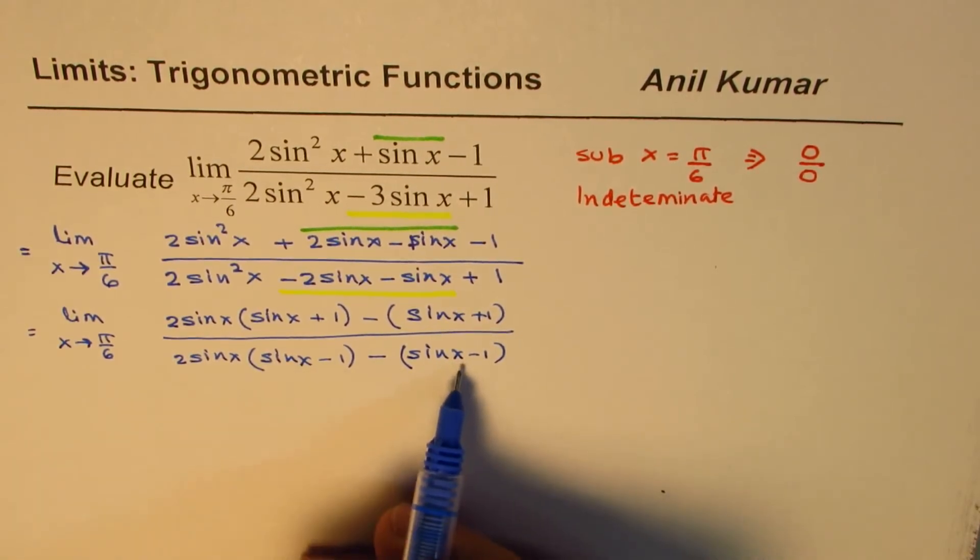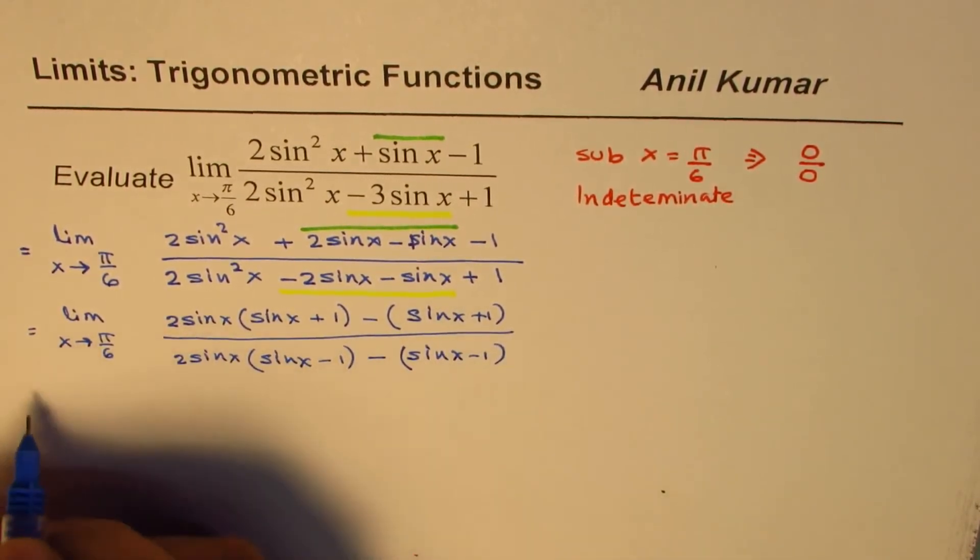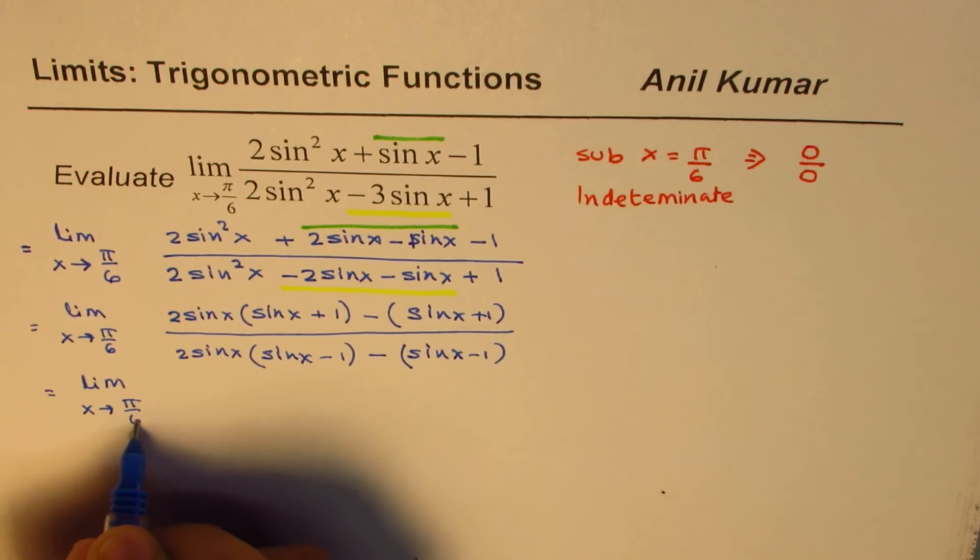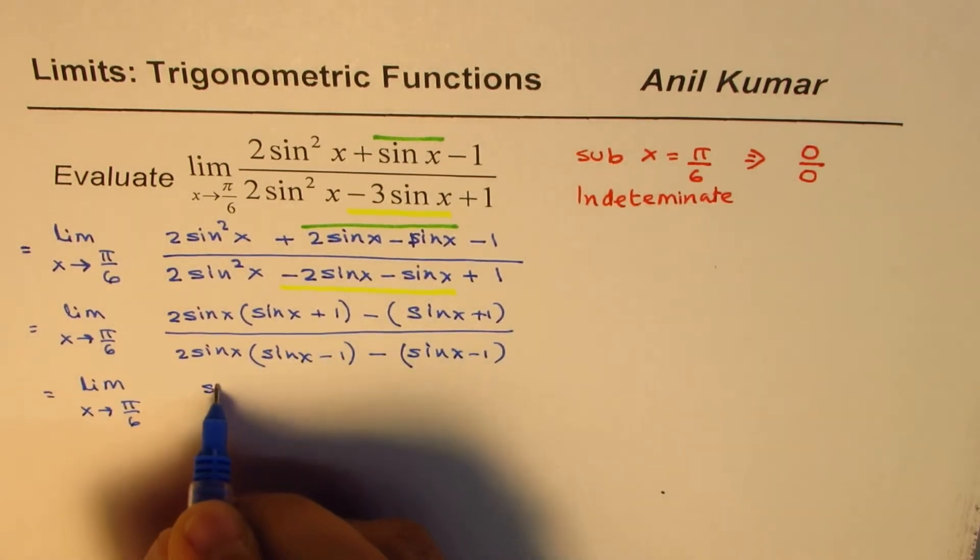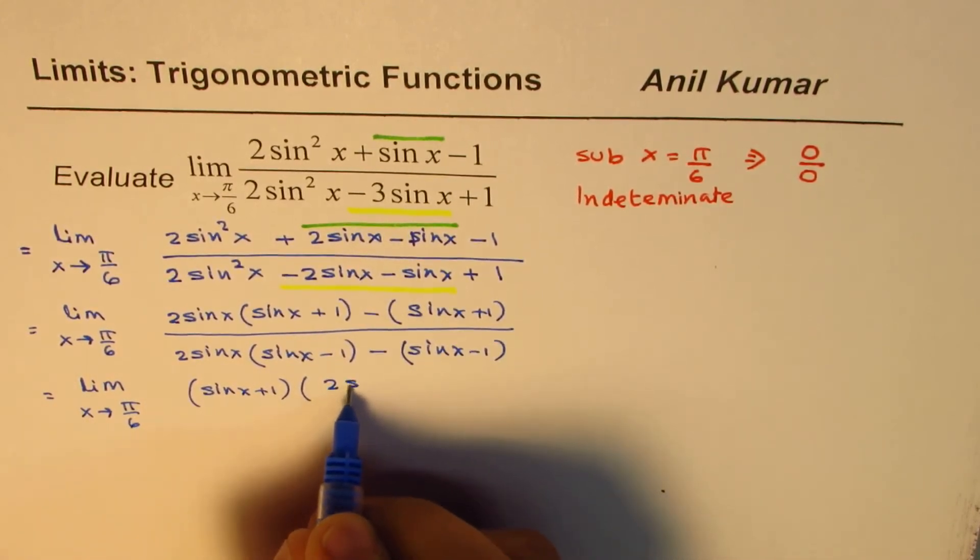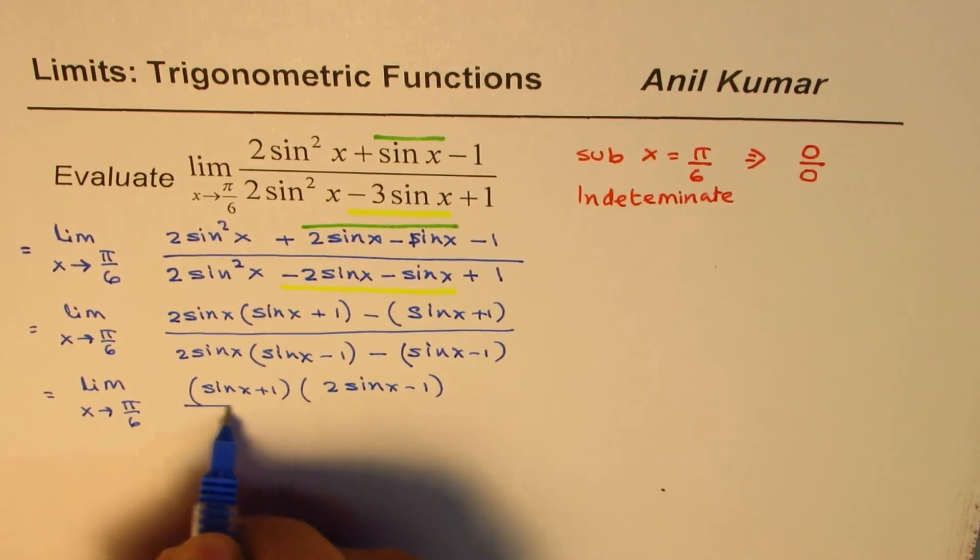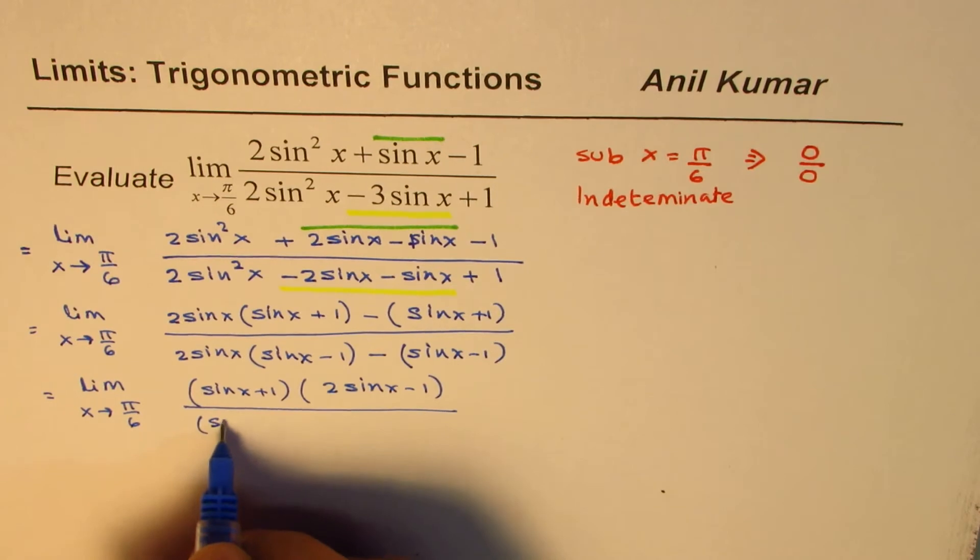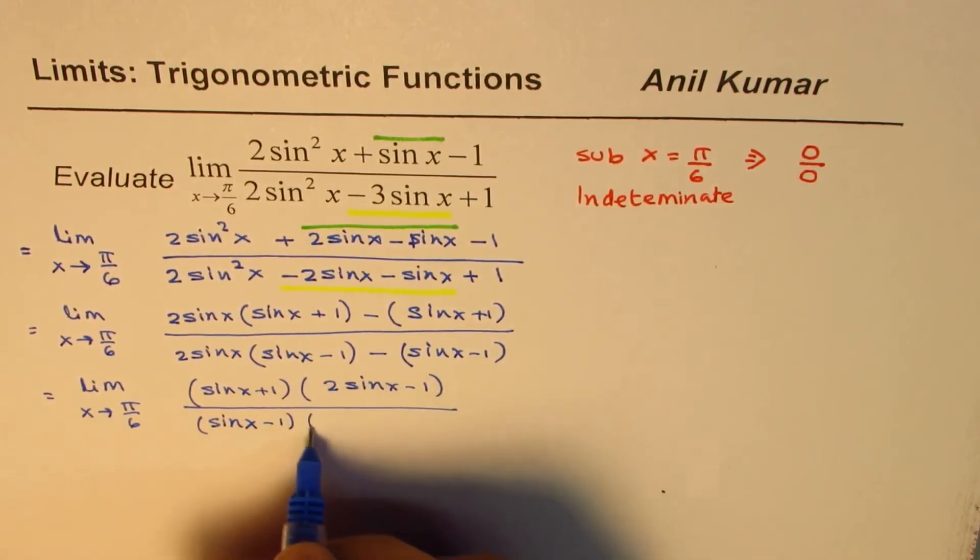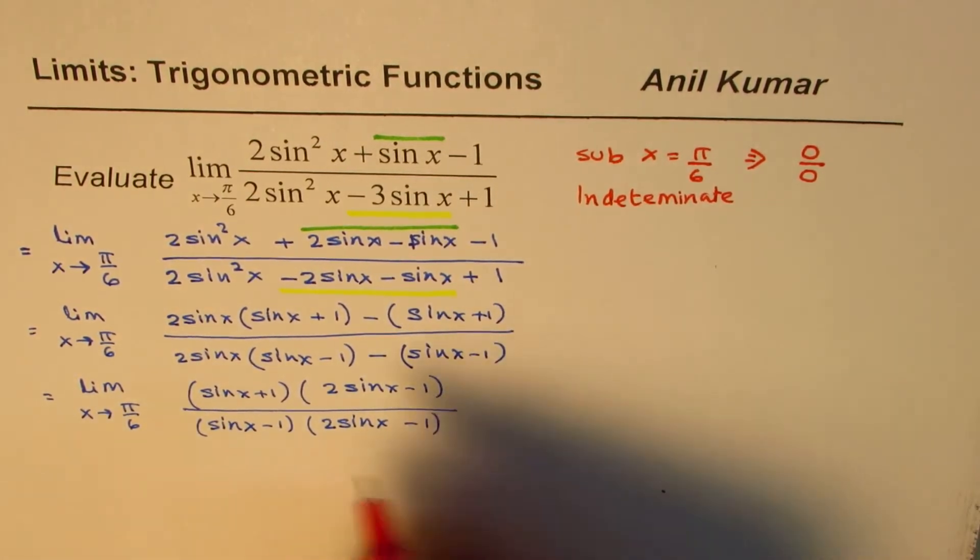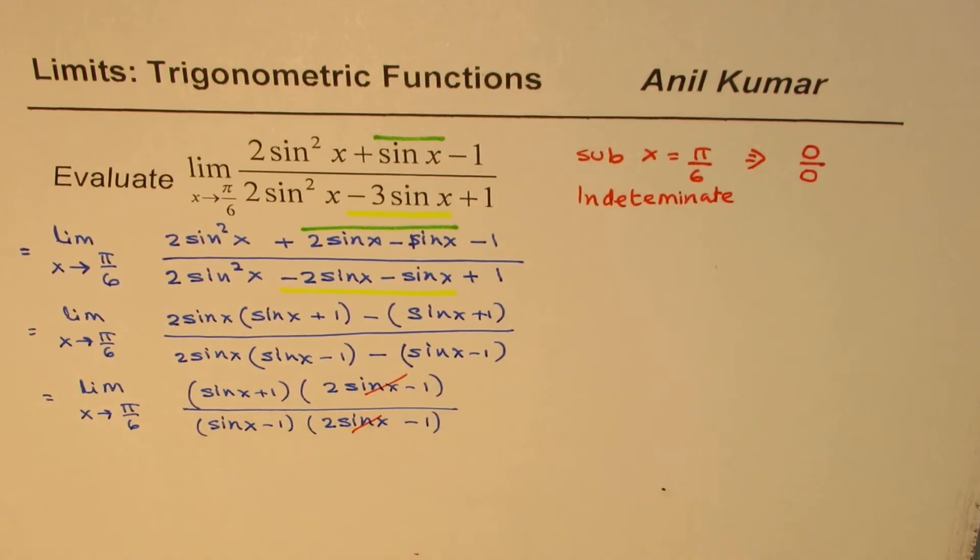Now sinx minus 1 is common in the denominator. Sinx plus 1 is common in the numerator. So we could write this as limit x approaches π/6, sinx plus 1 times (2sinx - 1). And here we have sinx minus 1 common. So we have sinx minus 1 times 2sinx minus 1. Do you see that? Now this 2sinx minus 1 is a common factor which is now being cancelled.